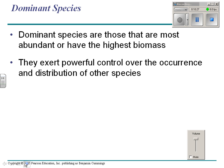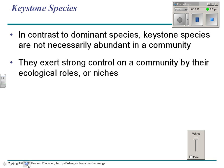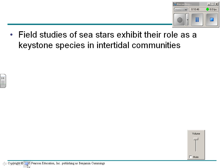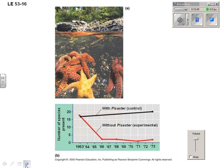Dominant species are those that are the most abundant or have the highest biomass, and they exert powerful control over the other species. Keystone species are not necessarily the most abundant, but by what they do, they're really important. For example, here's the number of species that live in the intertidal community with the sea star Pisaster present — and look what happened when they removed them: the number of species in that community went down to two.